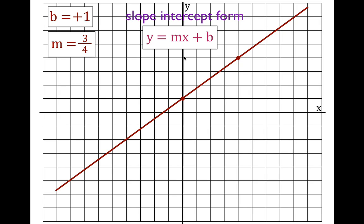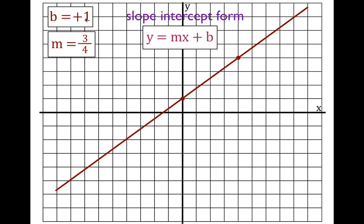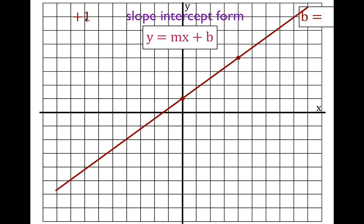Now we can simply write the equation for the line: y equals mx plus b. We insert three-fourths for m and plus one for b, and we get y equals three-fourths x plus one. Write down the slope, write down the y-intercept, plug those values in, and that is the equation of that line in slope-intercept form. Now we're going to do some more and go a little faster.